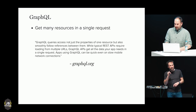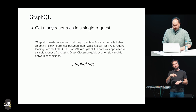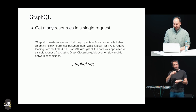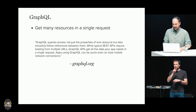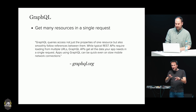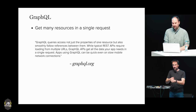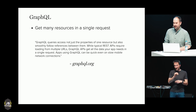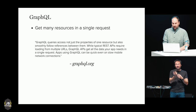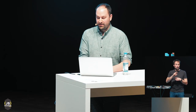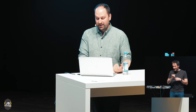Here's a quote from the GraphQL website: "GraphQL queries access not just the properties of one resource, but also smoothly follow references between them. While typical REST APIs require loading from multiple URLs, GraphQL APIs get all the data your app needs in a single request. Apps using GraphQL can be quick, even on slow mobile network connections." One of the main goals of GraphQL is to cut down on round trips — it allows you to query for any amount of nested data in just one single request.